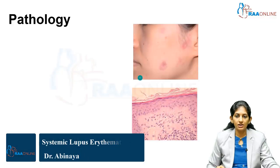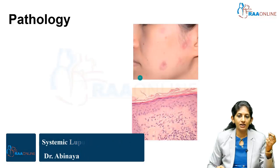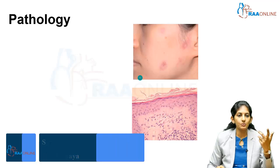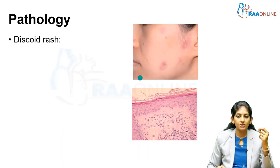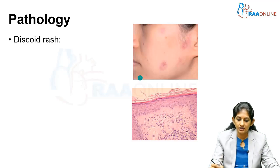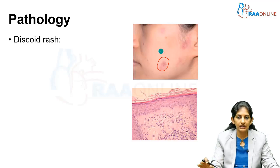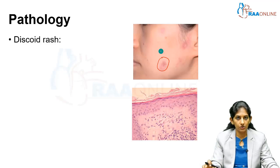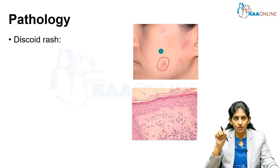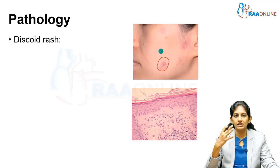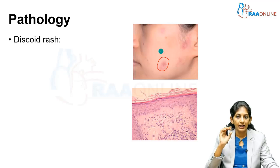Some skin biopsies are done — what is the pathology or the HPE examination findings? In the first image, you can see a discoid rash, which is seen in systemic lupus erythematosus. By the term 'discoid' we know that it is a disc-shaped or coin-shaped rash, which is predominantly present in the scalp and in the face in patients of SLE.